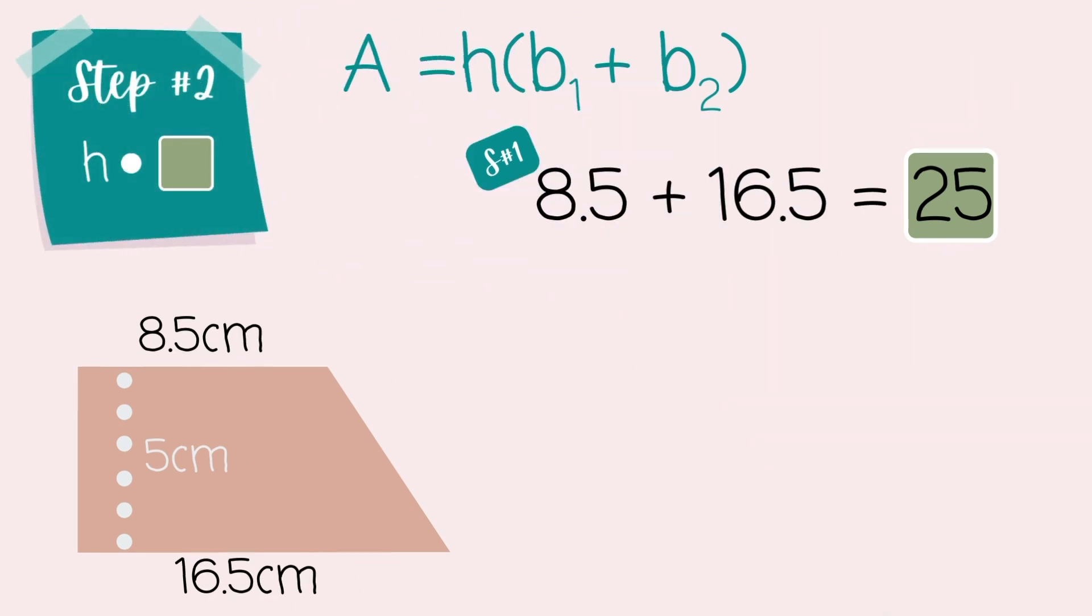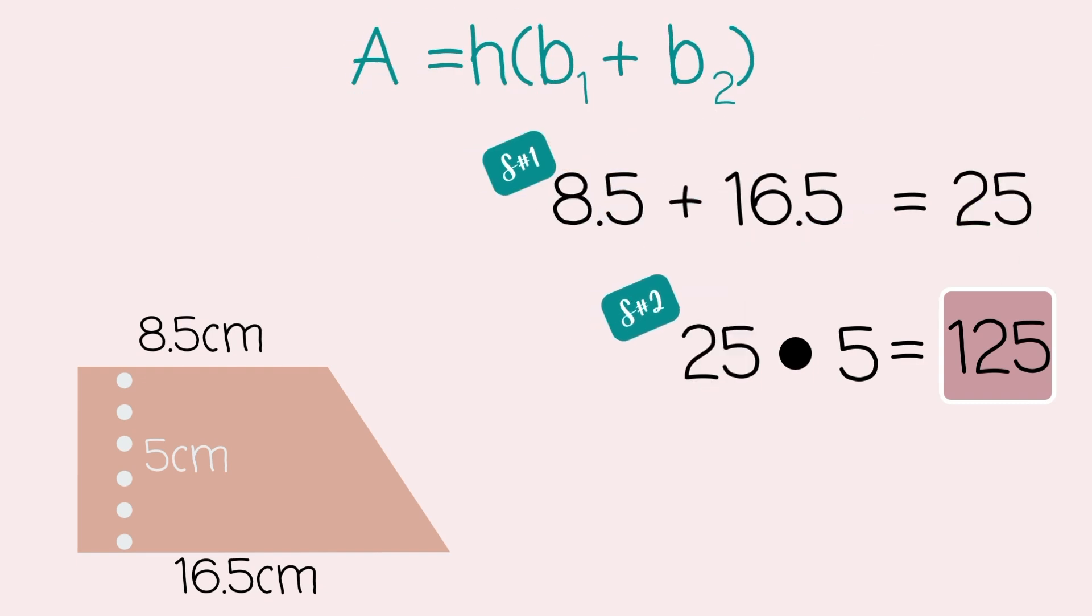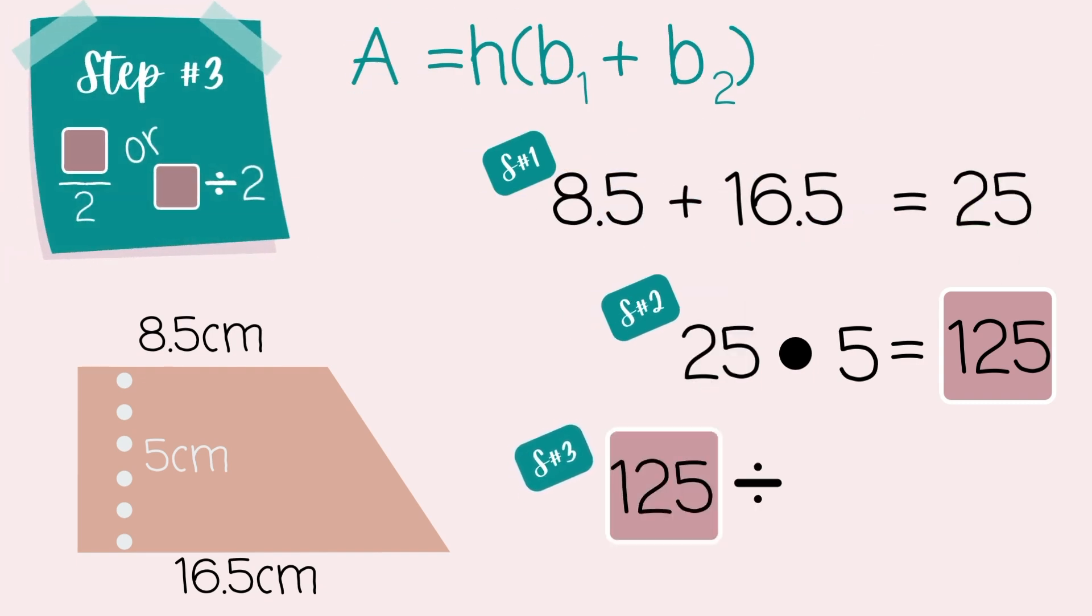For step 2, we're now timesing the height. So, I have 25 times 5, giving me 125. And last, step 3, we're taking 125 and dividing it by 2, giving us 62.5 centimeters squared.